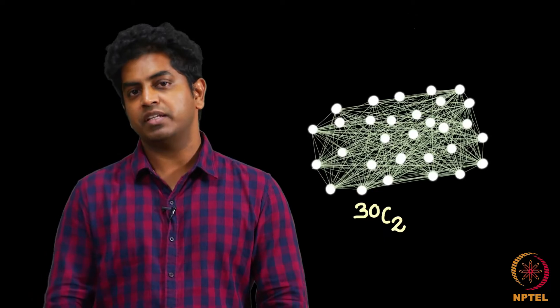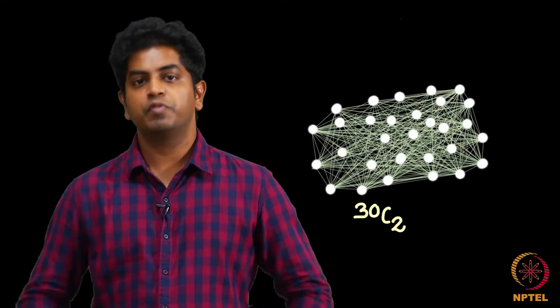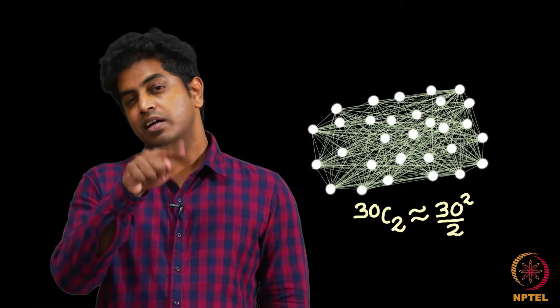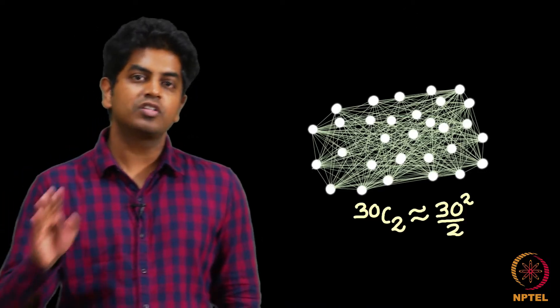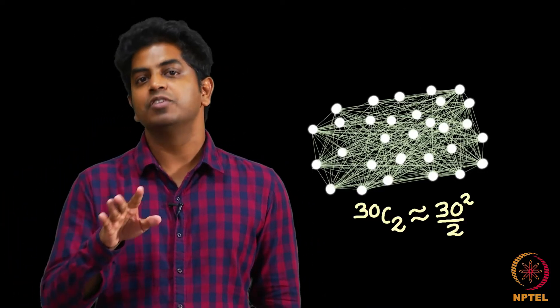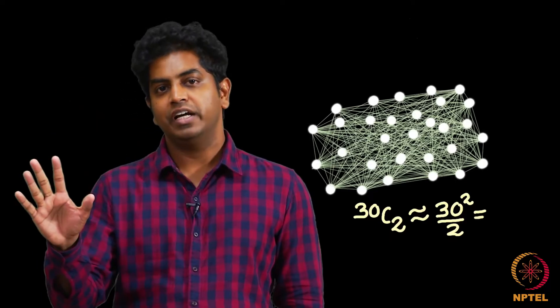How many possible friendships are there here? We have discussed this before. It is roughly 30 square by 2. To be precise, it is 30 into 29 by 2, but throughout the discussion in this course, a graph on n number of vertices, we assume has roughly n square by 2 number of edges.